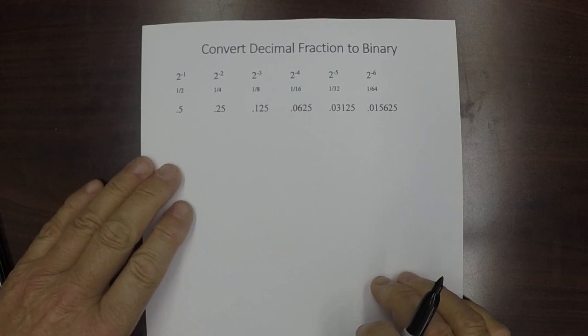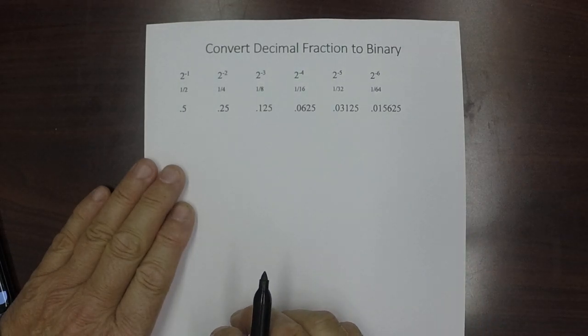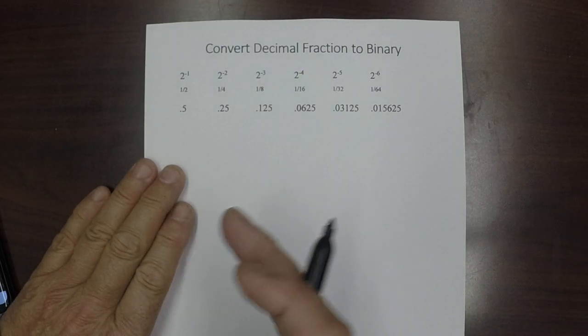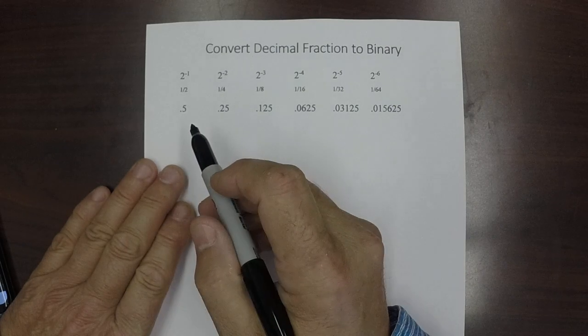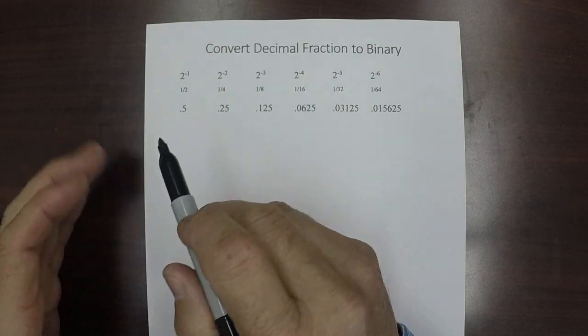Now recall that in the whole number, each bit position had a value. The first position was 2 to the 0, the second was 2 to the 1, 2 to the 2, and so forth.